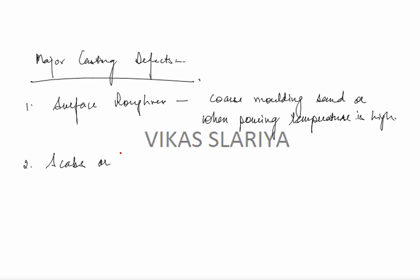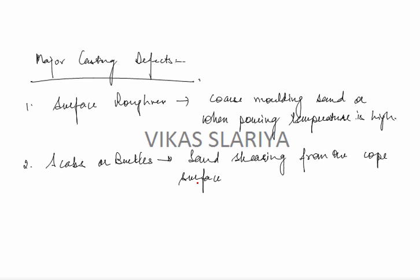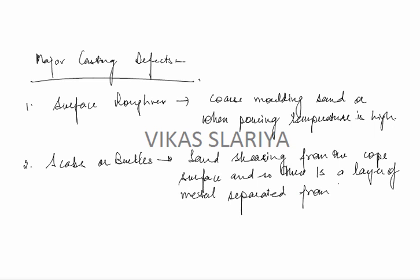Scabs and buckles occur because of sand shearing from the cope surface, and so there is a layer of metal separated from the casting by a layer of sand.